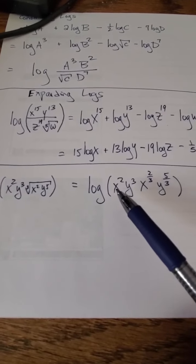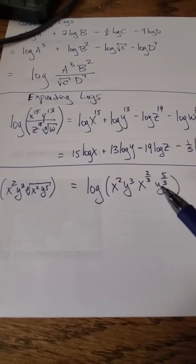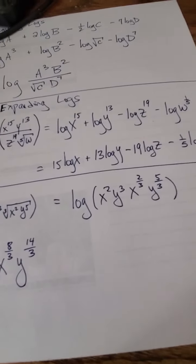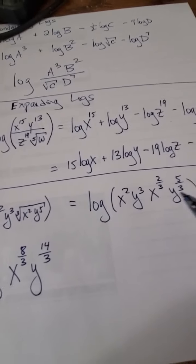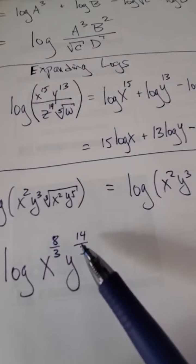But now once I have that, I can combine these two x's and those two y's and combine it even further. 2 plus 2/3rds is 8/3rds, and 3 plus 5/3rds is 14/3rds.